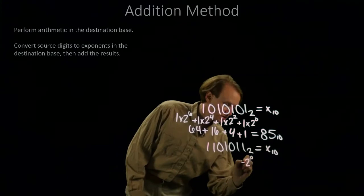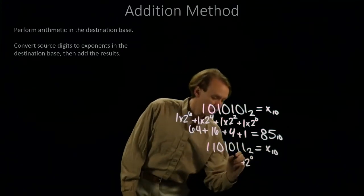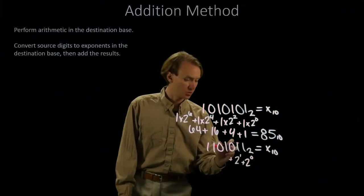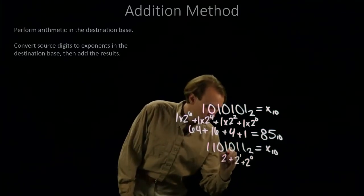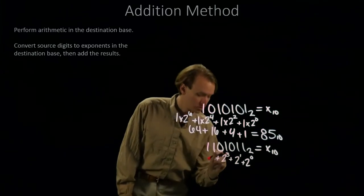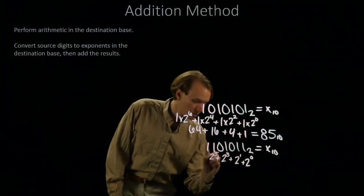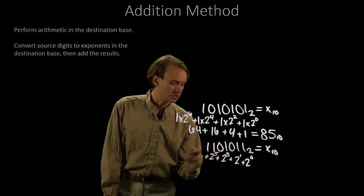I'm going to find all of these exponents that I'm interested in and just add them up. So I have 2 to the 0, 2 to the 1st, 2 squared, 2 cubed, 2 to the 4th, 2 to the 5th, and 2 to the 6th.